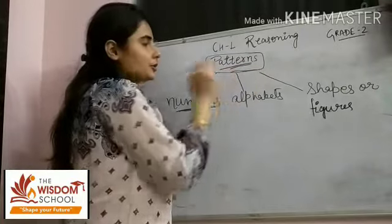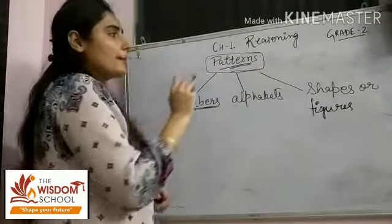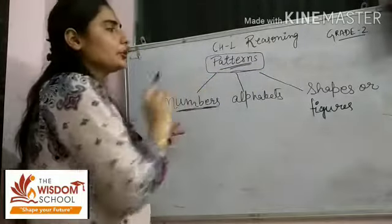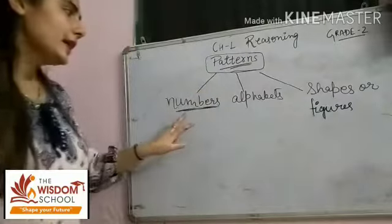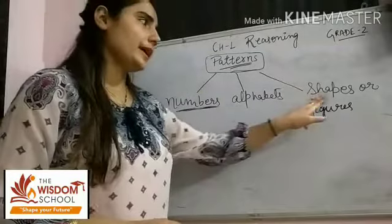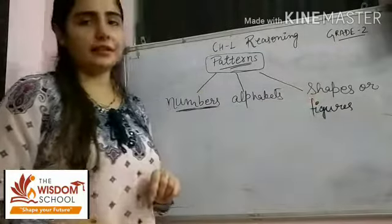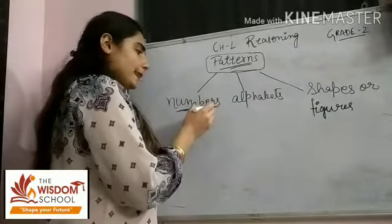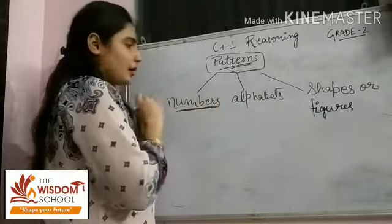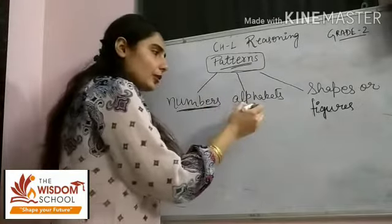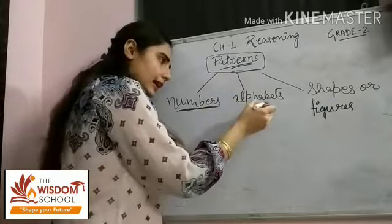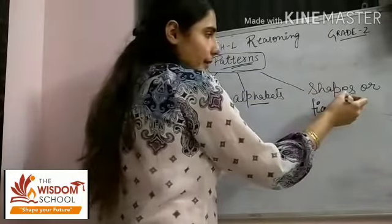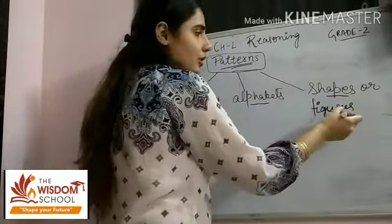So in this chapter, students — Patterns. First of all, you all should know patterns ka kya meaning hai. Patterns jo hota hai bachon, yeh haam teen forms mein find kar sakte hain: first form hota hai numbers ka, second form hoga alphabets mein, and third form hota hai shapes ka.